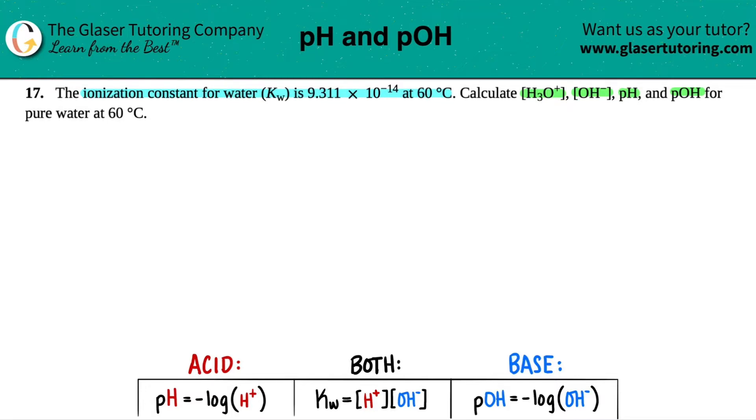Okay. So what I labeled and listed down here are the start of some of the formulas that we need to memorize for this chapter. So I listed them into acidic equations, basic equations, and equations that you will see both acidic and basic properties for.